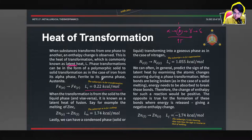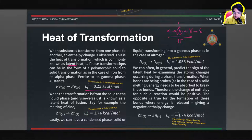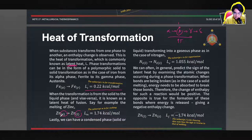This also applies not just to allotropes, but to different states of matter — for example, solid to liquid also has an associated latent heat or heat of transformation. L sub T is for transformation, L sub M for melting, L sub V for vaporization, and L sub F for freezing. Some textbooks only show absolute values without indicating positive or negative, so you need to think about whether bonds are being created or broken to determine the sign.